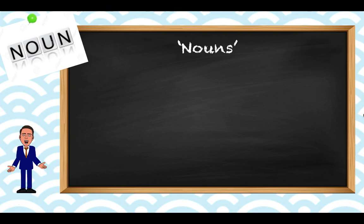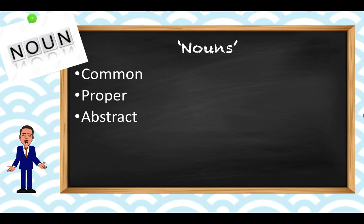There are different types of noun — five that we will focus on — and they are common nouns, proper nouns, abstract nouns, possessive nouns, and collective nouns. The common way of defining a noun as a person, place, or thing is still quite useful to us, but we're going to go into a little bit more detail here.